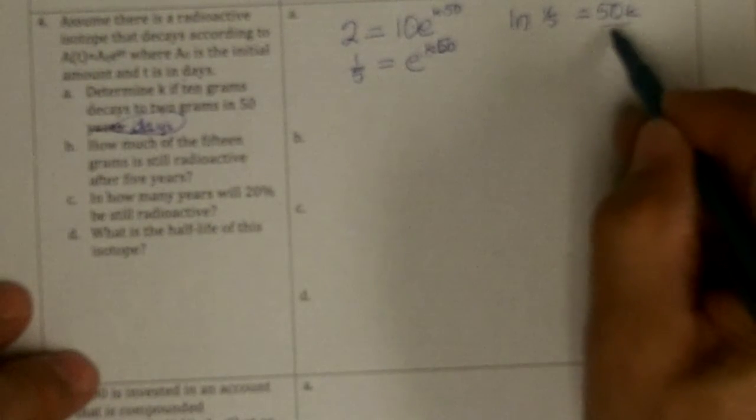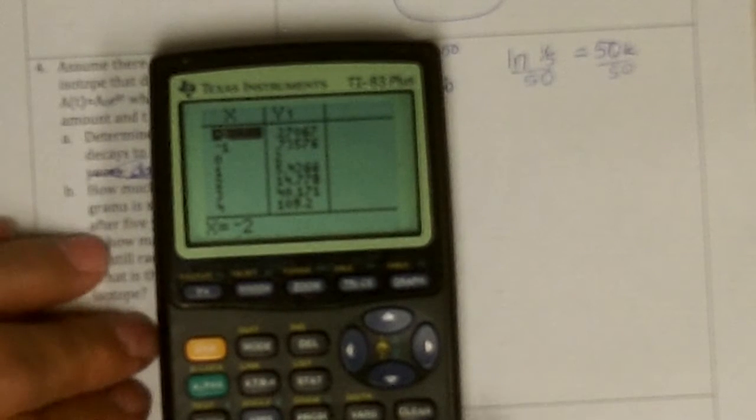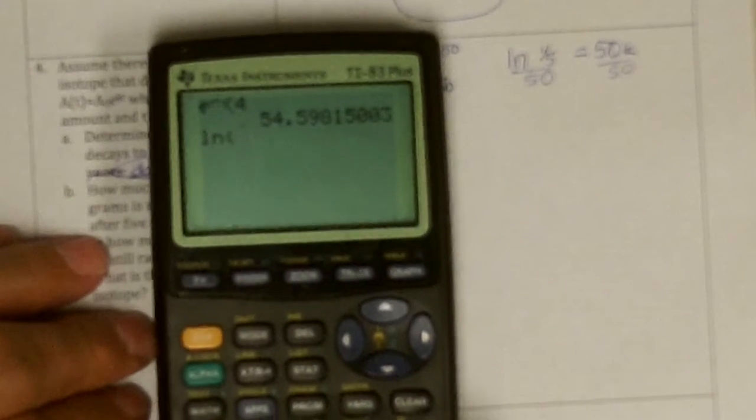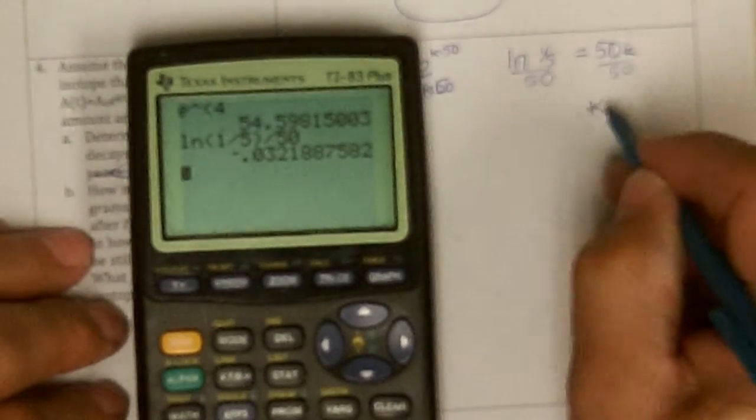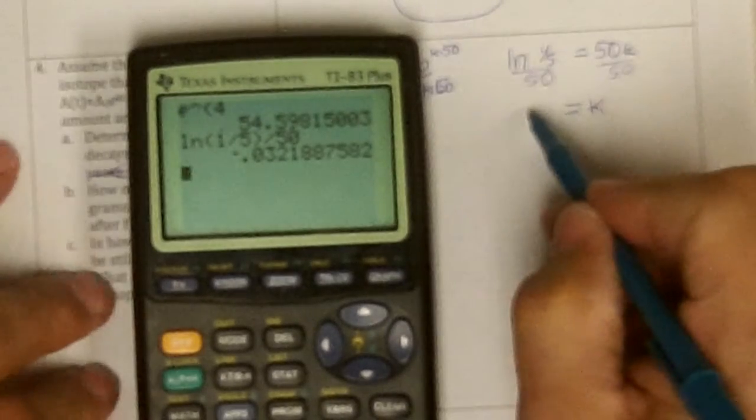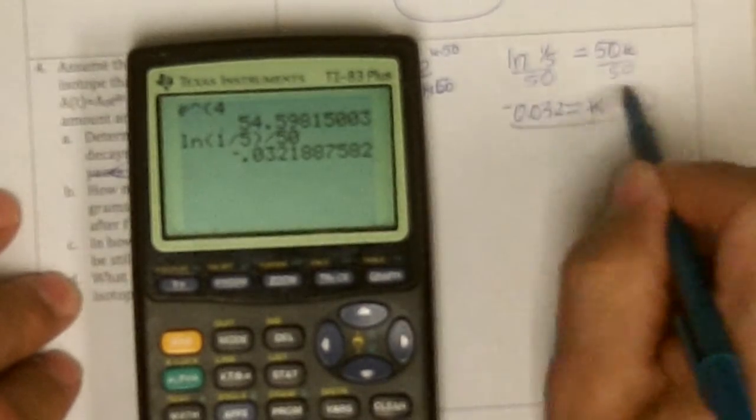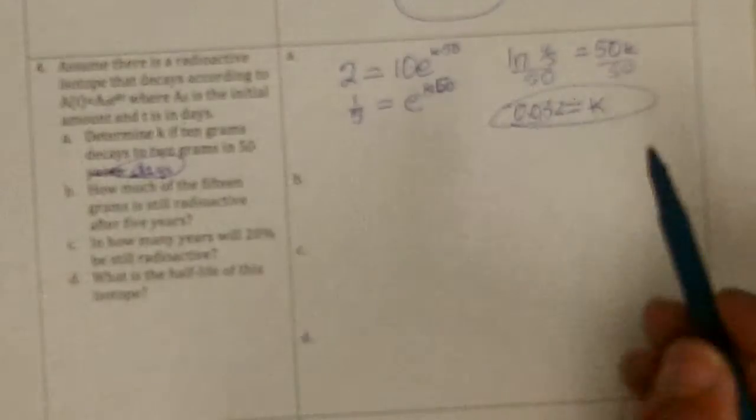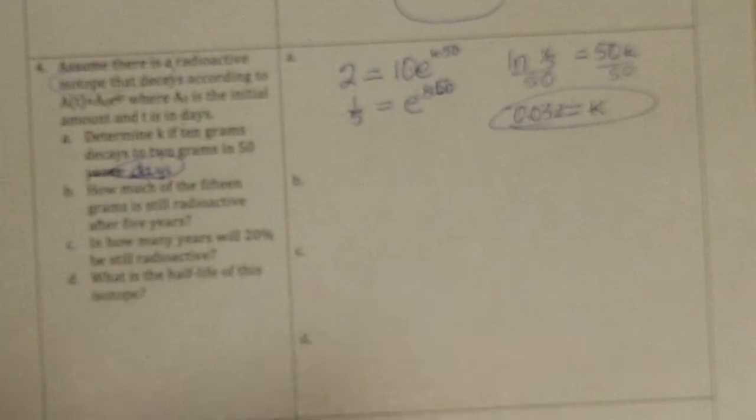So I'm going to divide by 50, so I'm going to do ln 1 fifth, divided by 50, and I get a k, a decay constant. It's negative, so it's decay, of negative 0.032. That's close enough to approximate. And so that's the k in this formula for this radioactive isotope for all the rest of the problems.